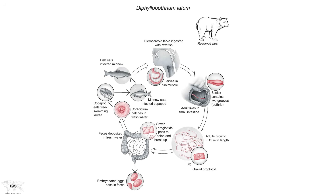The word bothria means groove. The scolex has two grooves, one on either side, so it can attach itself in either direction, creating a suction and remaining attached in this fashion. Like all other tapeworms discussed so far, this tapeworm feeds on a little bit of what we feed on, absorbing it through its tegument, which has a series of microvilli all over the cells all the way down the body of the worm — and that's how it grows.